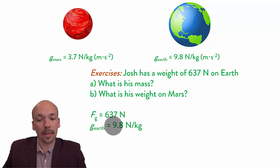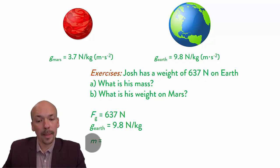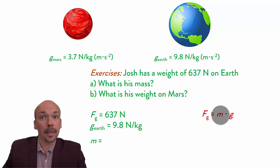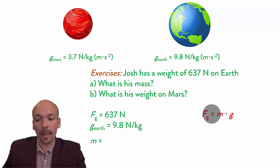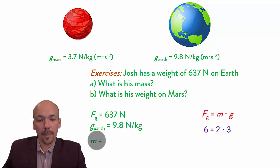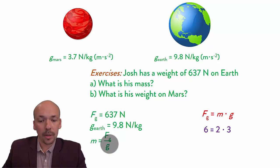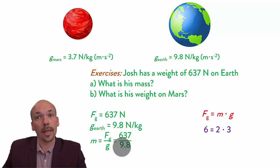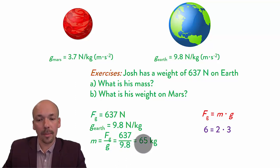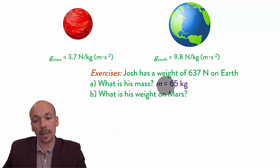We need to calculate his mass, so we need to find M. We know the equation Fg = m times g, but M is in the middle so we have to rearrange it. Compare it to 6 = 2 times 3 — it has the same structure. To find M, which is the 2, you divide 6 by 3. So you divide Fg by g. That gives us 637 divided by 9.8, and that is 65 kilograms. So now we know his mass — his mass on Earth is 65 kilograms.